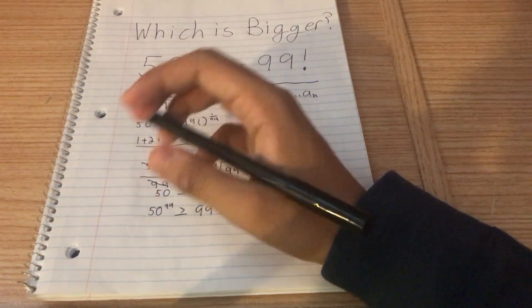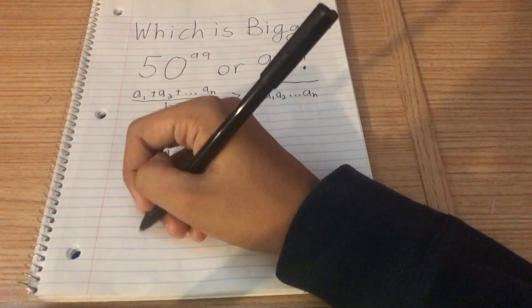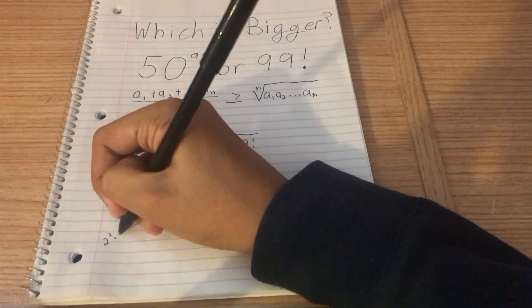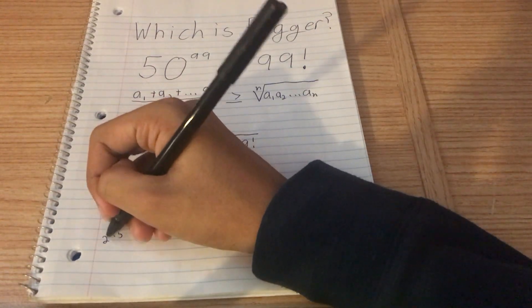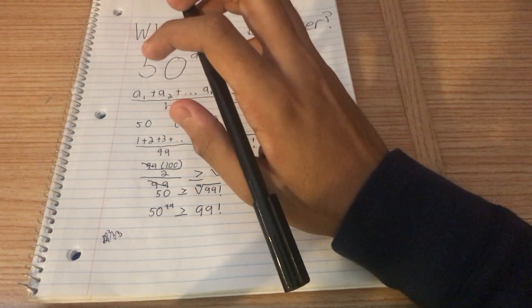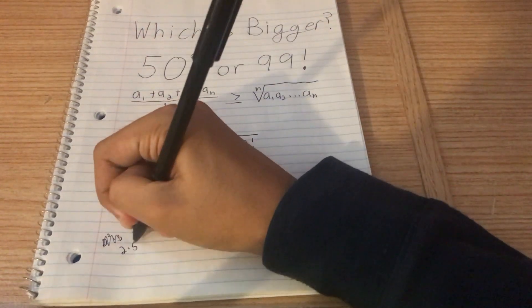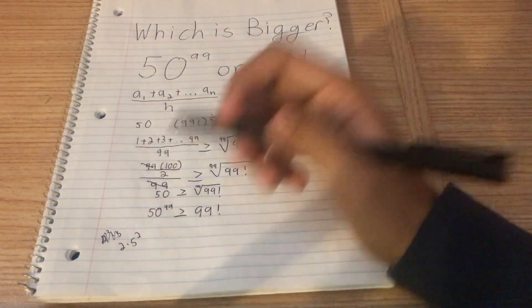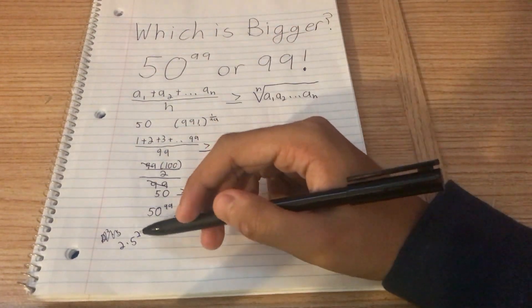50 is 5 times 10. 10 is 2 times 5. So 50 is equal to 2 squared times... Oh, sorry. Not 2 squared times 5. 50, it's 2 times 5 squared. My bad. 2 times 5 squared. And that is the prime decomposition.